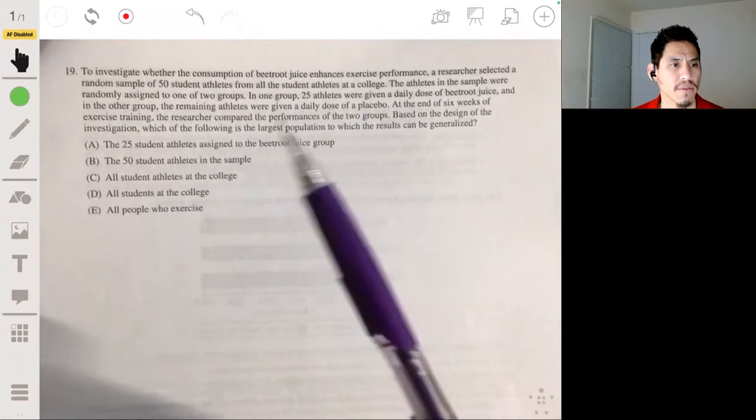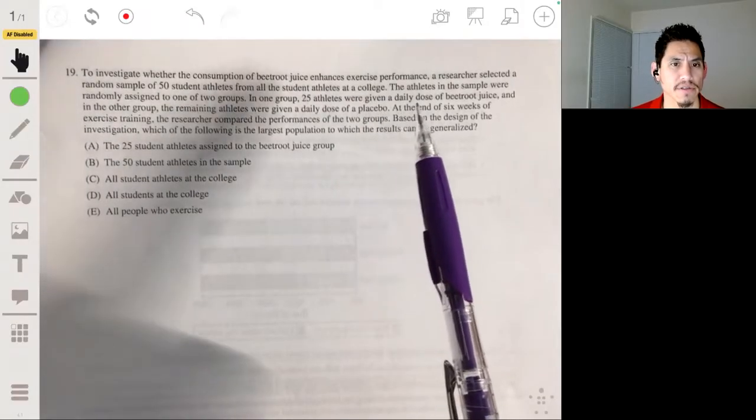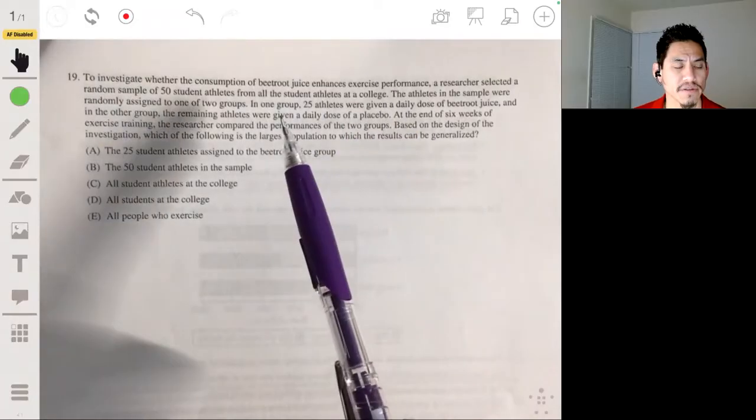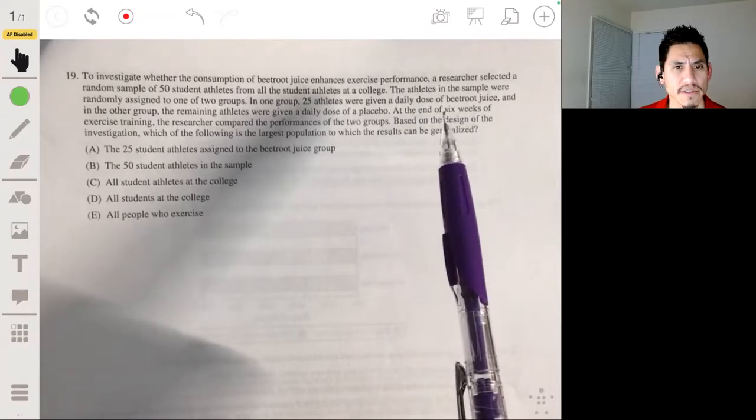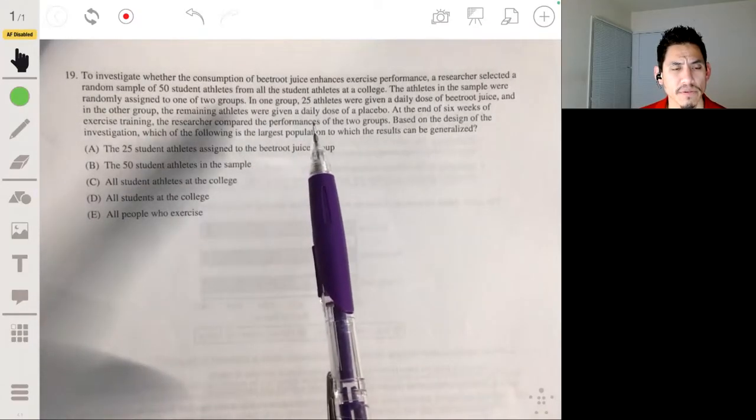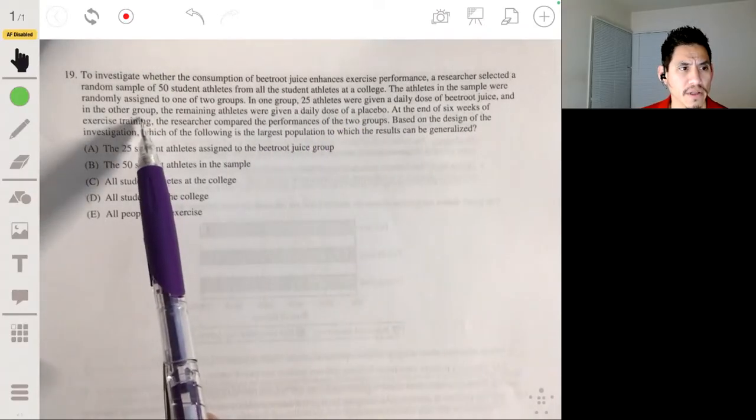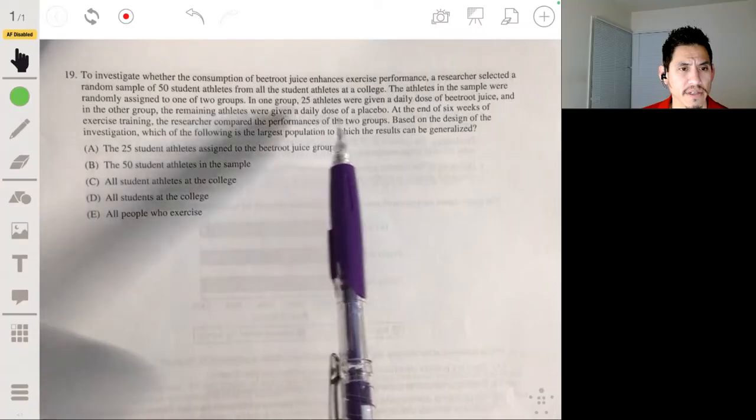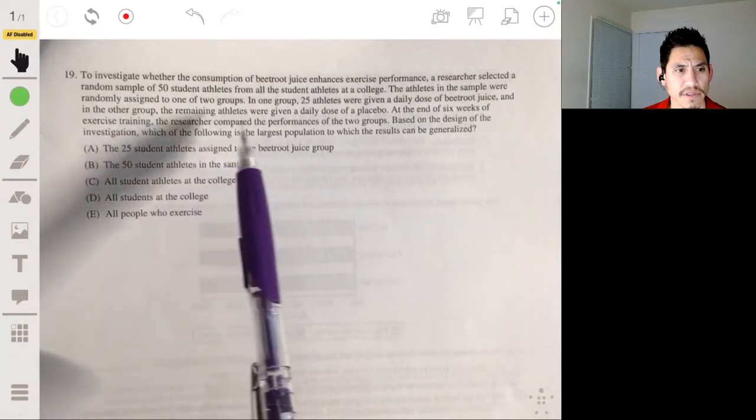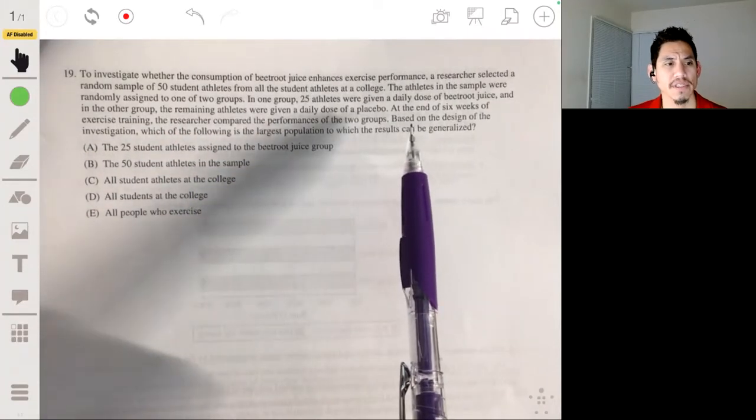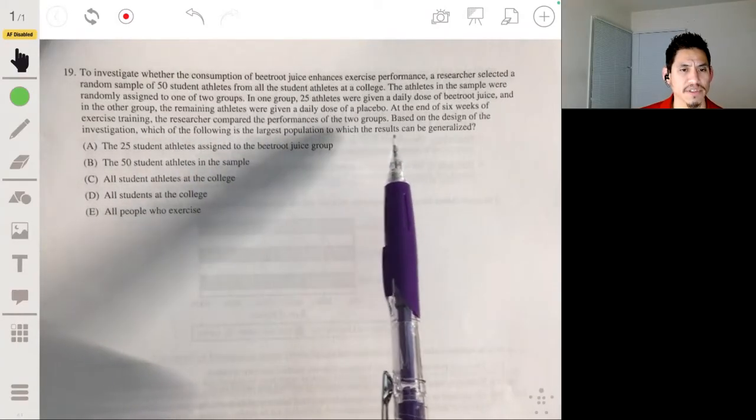Alright, number 19 says to investigate whether the consumption of beetroot juice enhances exercise performance, a researcher selected a random sample of 50 student athletes from all the student athletes at a college. The athletes in the sample were randomly assigned to one of two groups. In one group, 25 athletes were given a daily dose of beetroot juice, and in the other group, the remaining athletes were given a daily dose of a placebo. At the end of six weeks of exercise training, the researcher compared the performances of the two groups based on the design of the investigation, which of the following is the largest population to which results can be generalized.